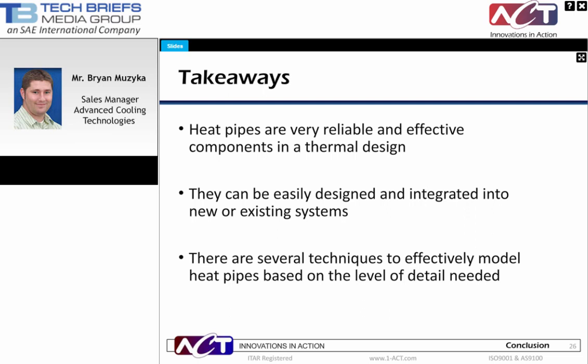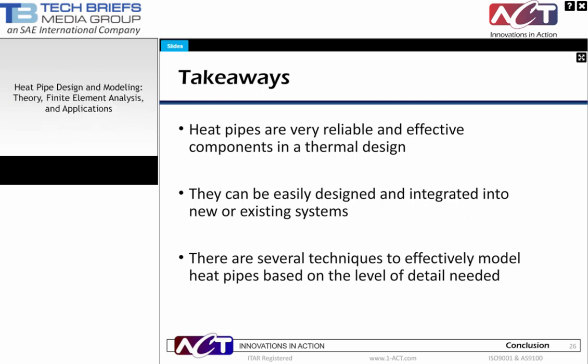Thanks, Brian. This is Billy Hurley with Tech Briefs. At this time, we'd like to begin our Q&A and welcome to the line Jens Wyatt, lead engineer for the Defense and Aerospace Group at Advanced Cooling Technologies. The first question: how thin of a bond layer is required, and what is the approximate conductivity of that layer? Typically, we like to see two-thousandths to four-thousandths of an inch clearance on the radius of the pipe. For example, for a quarter-inch diameter heat pipe at 0.25 inches, we would like to see a groove about 0.255 inches. As for the conductivity, solders range about 40 watts per meter K, whereas a lot of epoxies are about 1.4 to 4.5 watts per meter K.